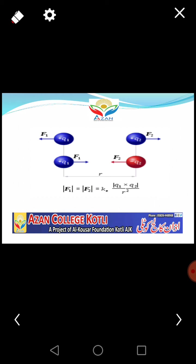These two charges are under observation, that's why we call them point charges or test charges. K is the proportionality constant.